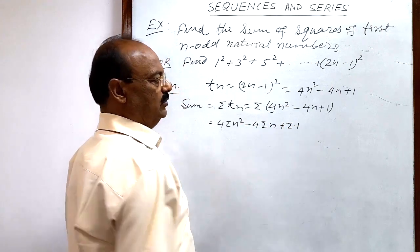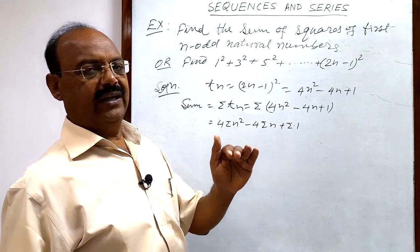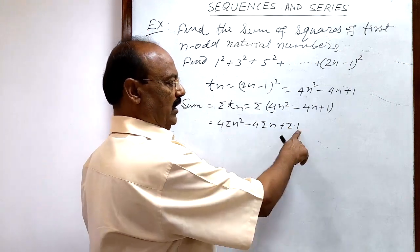Sigma 1 is equal to n, means 1 + 1 + 1 how many times? n times. So this is equal to n.